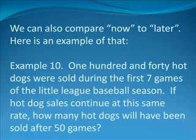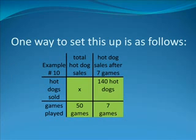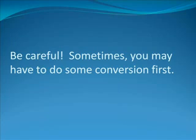Example 10. One hundred and forty hot dogs were sold during the first seven games of the Little League Baseball season. If hot dog sales continue at this same rate, how many hot dogs will have been sold after 50 games? One way to set this up is as follows. We're looking for total hot dog sales after 50 games. That should be our second column title. Hot dog sales after seven games, our reference amount, will be our column title for the third column. Our second row title is Hot Dogs Sold. Our reference is 140 hot dogs sold. The third row is games played. That's 50 games in column two, and seven games in column three. The second column is later. The third column is now.